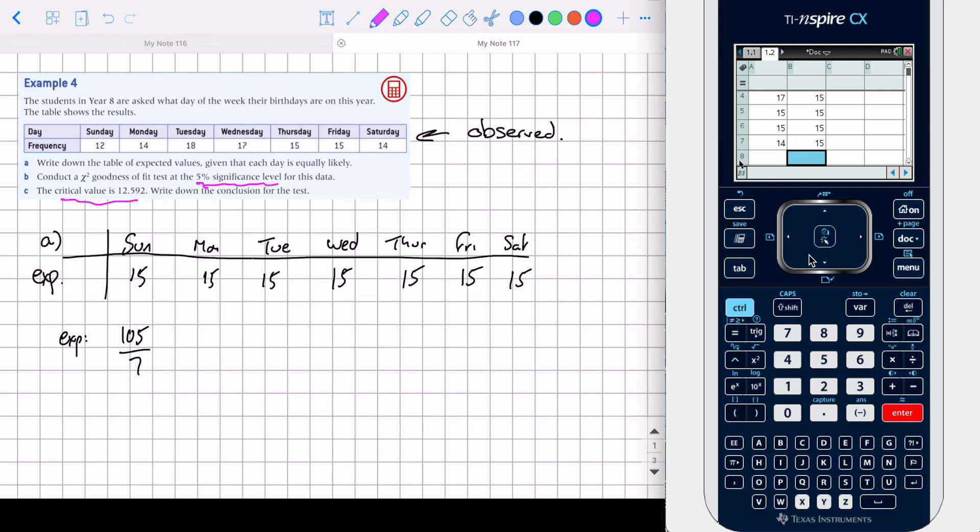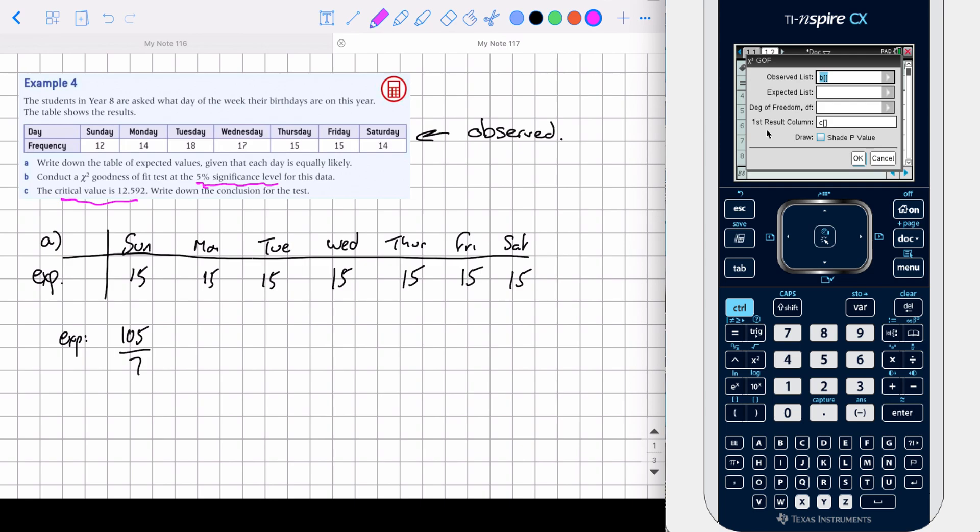So that tells us now that we've got both columns, everything's matched up. So we need to do a chi-squared goodness of fit test. So we've got to menu, statistics, statistical test. Remember, if we're doing an independence, that would be the two-way, but we've got this gof, G-O-F, goodness of fit.